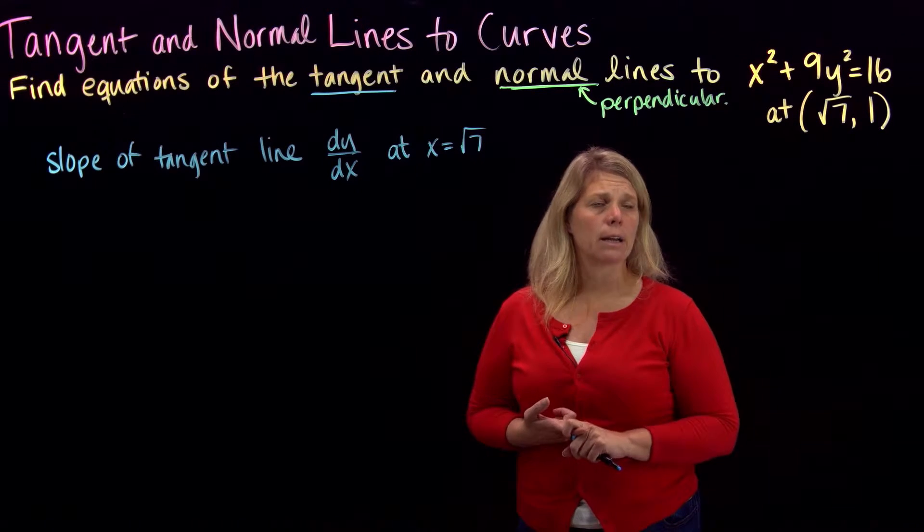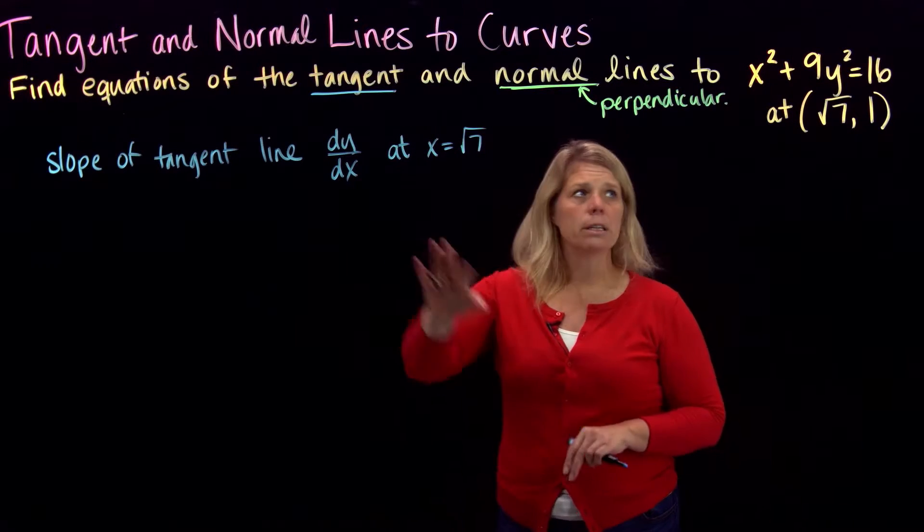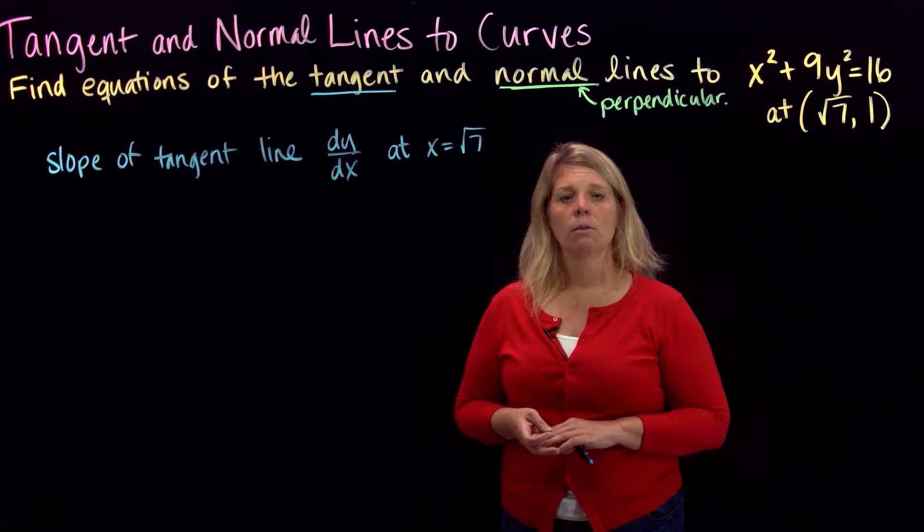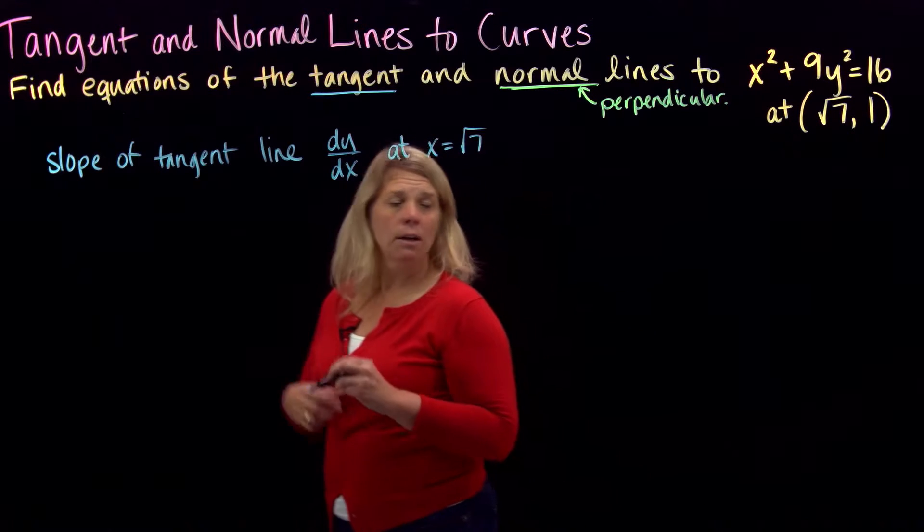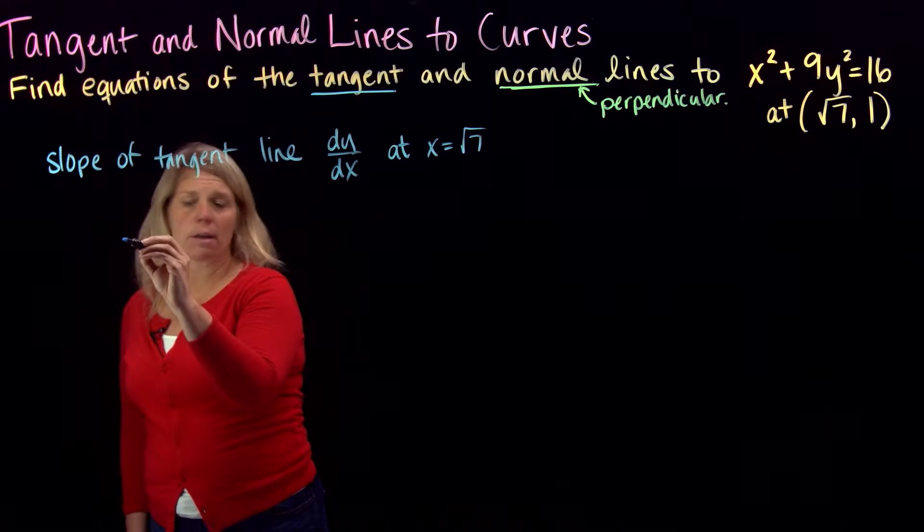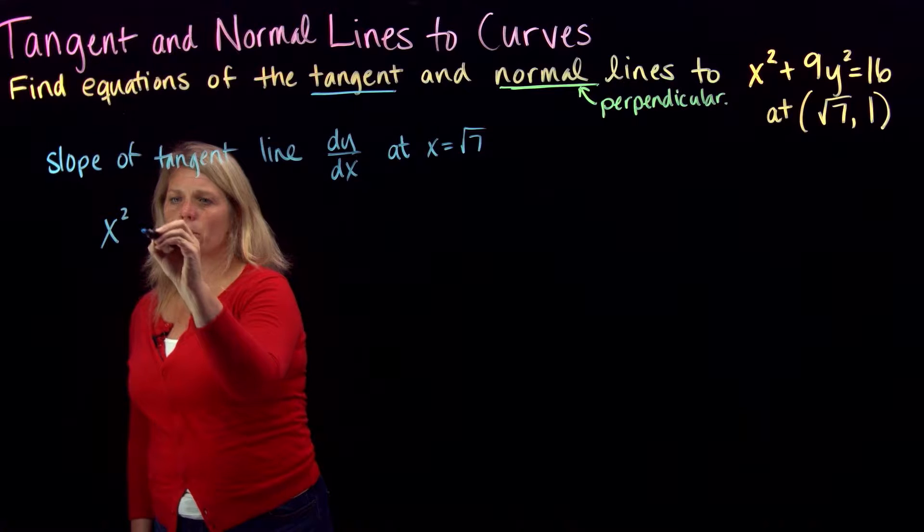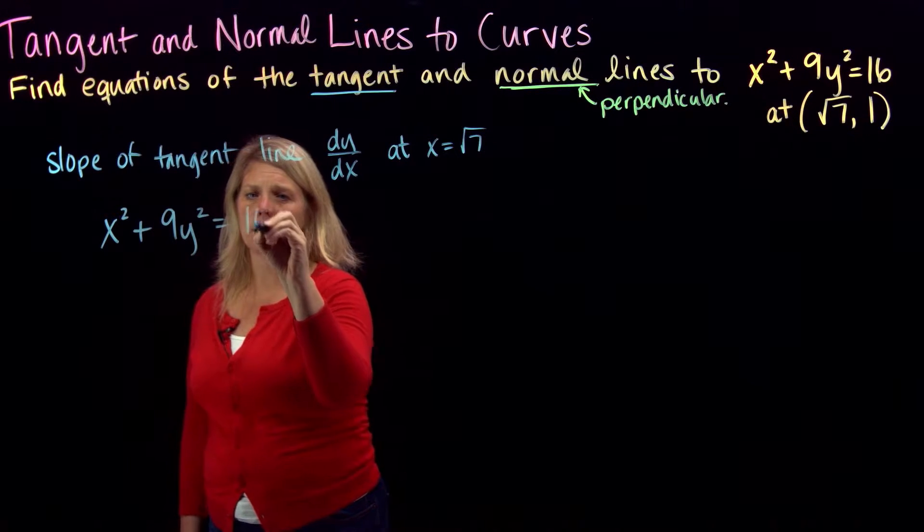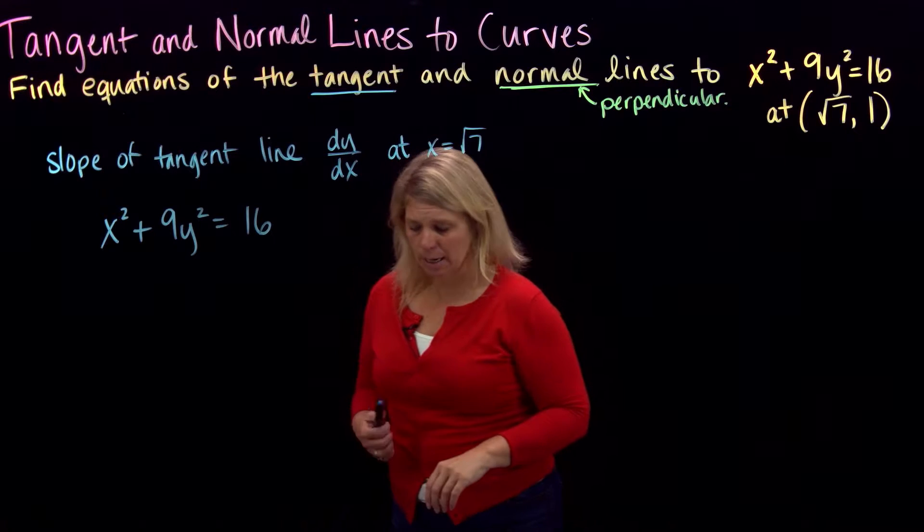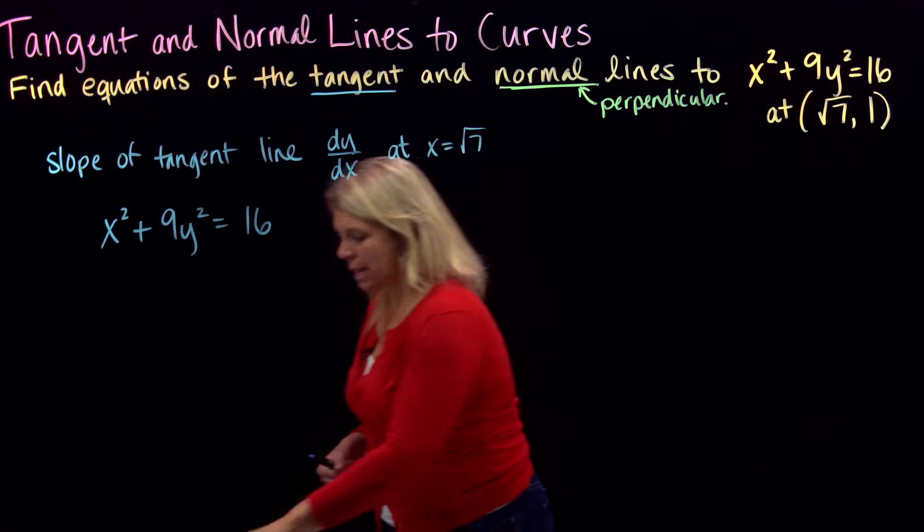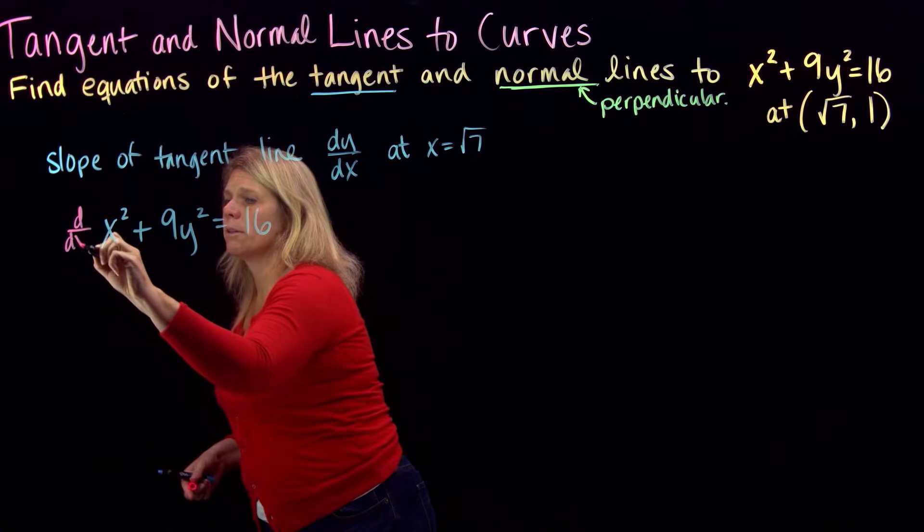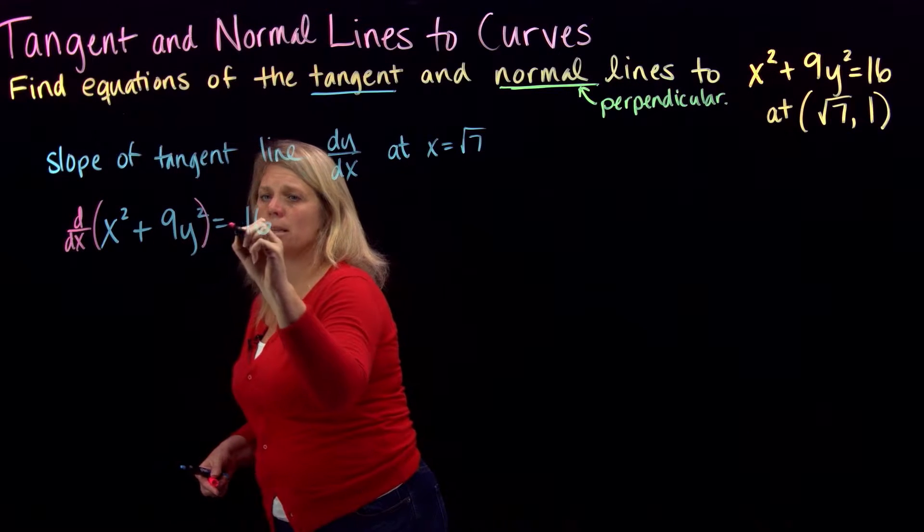So for this one, to find the derivative, the dy dx, we're actually going to use one of the differentiation techniques that we just recently learned, which is implicit differentiation. All right, so we're going to start with our equation x squared plus 9y squared equals 16. And we're going to differentiate implicitly with respect to x. So remember, that means we're going to find the derivative with respect to x of both sides of the equation.